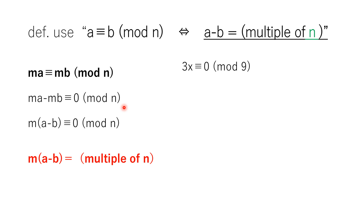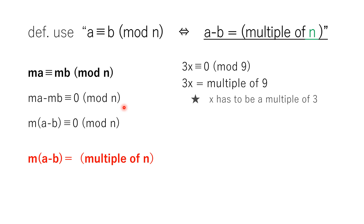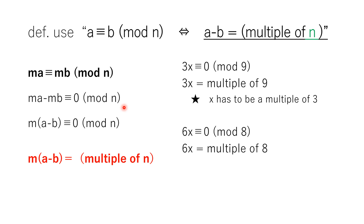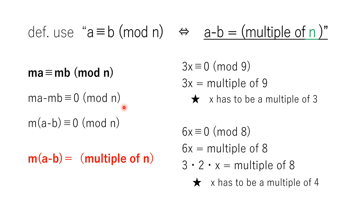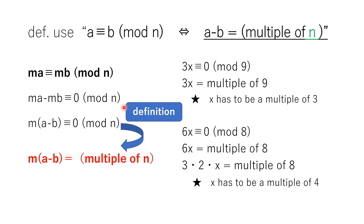Here are some examples. 3x is congruent to 0 modulo 9. This means 3x is a multiple of 9; therefore x has to be a multiple of 3. Next, 6x is congruent to 0 modulo 8. This means 6x is a multiple of 8, so x has to be a multiple of 4. You can use this definition here — the transformation.